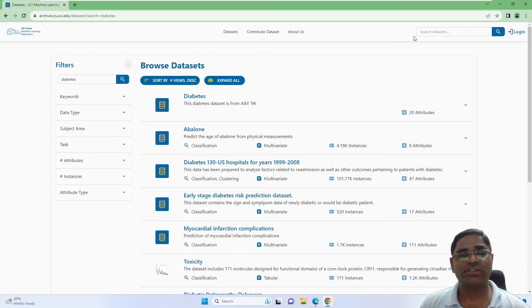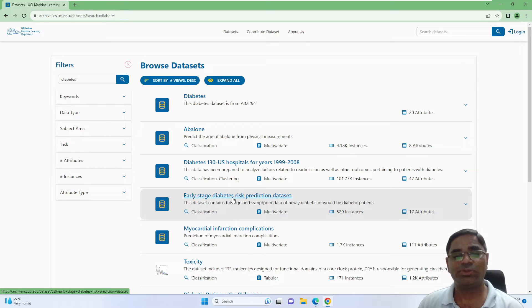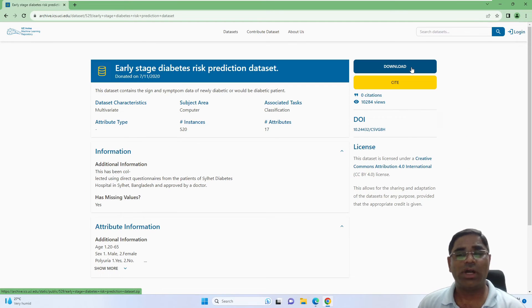Here if I search diabetes, then this particular dataset, early stage diabetes risk reduction dataset, this is the dataset that is used in the article. So I will download the dataset. It would be downloaded in a zip format.